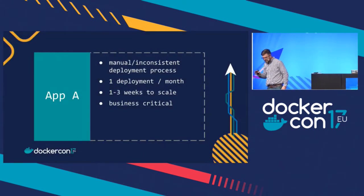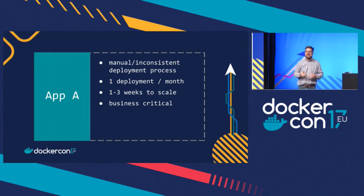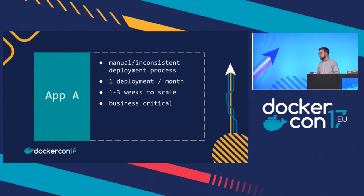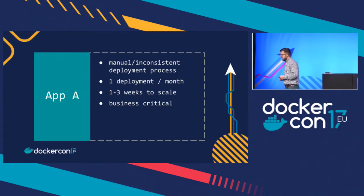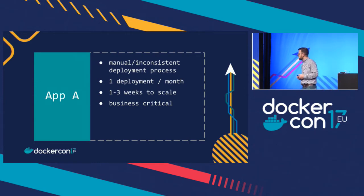To get started, I'd like to show you a comparison — a story of two different applications. For sake of simplicity, we'll call one App A and one App B. Application A has a very manual, inconsistent deployment process. We deploy about once a month, and that's really as fast as we can go. It takes about one to three weeks to scale the underlying infrastructure, and this is a business-critical application.